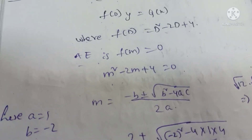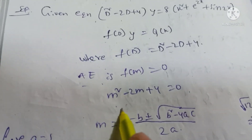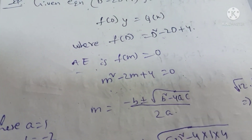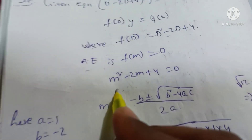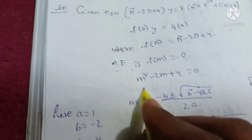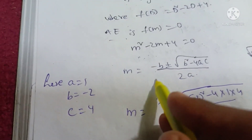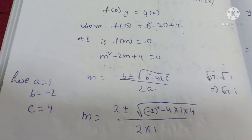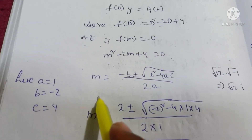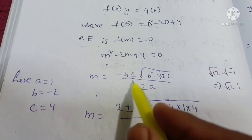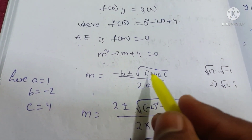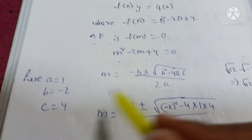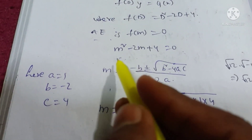So m squared minus 2m plus 4 is equal to 0. Therefore, using the quadratic formula, m is equal to minus b plus or minus root over b squared minus 4ac, all over 2a. By formula: